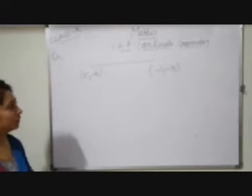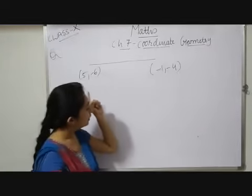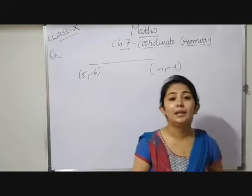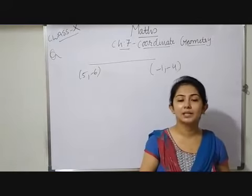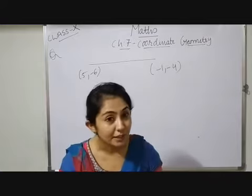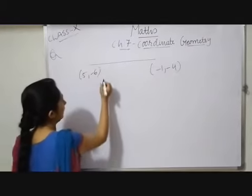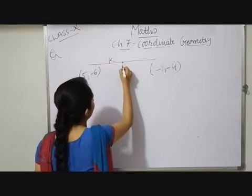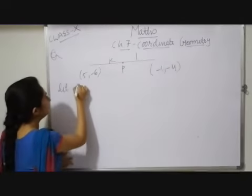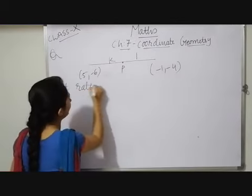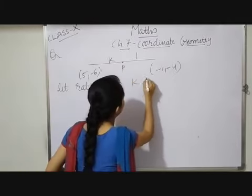It is given in your question that it is divided by Y axis. Divided by Y axis means your X coordinate 0. So let me first of all assume let the ratio be K:1. Let ratio be K:1.